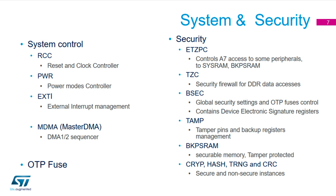For DMA, there are multiple controllers: a master DMA more associated with the A7, plus the standard DMA1 and DMA2 familiar from Cortex-M devices. There are also OTP fuses for storing MAC addresses, serial numbers, and version numbers. Some OTP fuses are reserved for features, some for user functionality to configure parts of the system — we'll highlight those later.